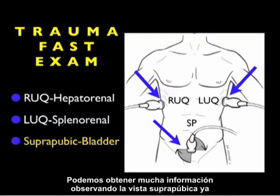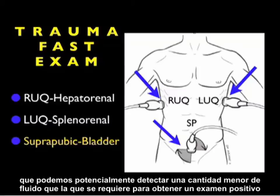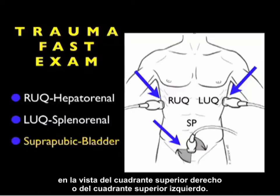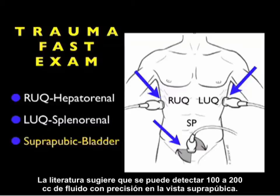There's a lot of information we can gain from looking at the suprapubic view, as we can potentially detect a smaller amount of fluid than is required to make a positive right upper quadrant or left upper quadrant view. The literature suggests that only about 100 to 200 cc's of fluid can be detected accurately on the suprapubic view.